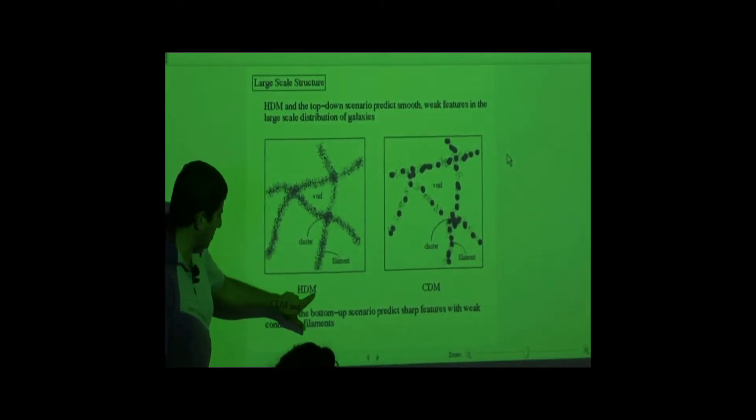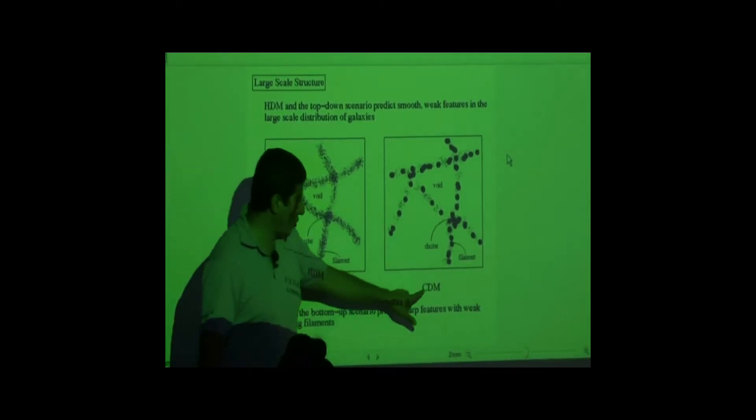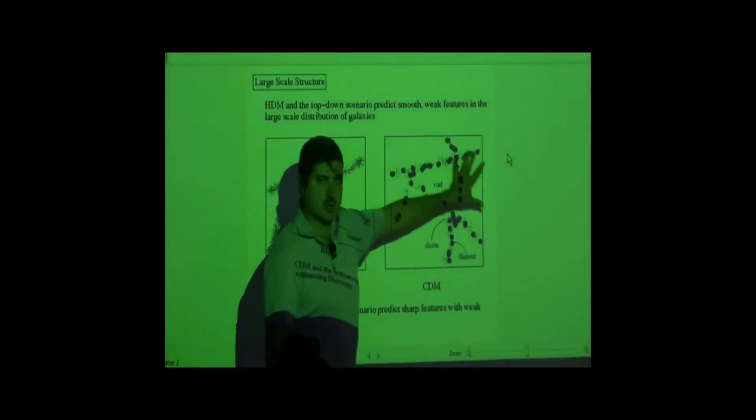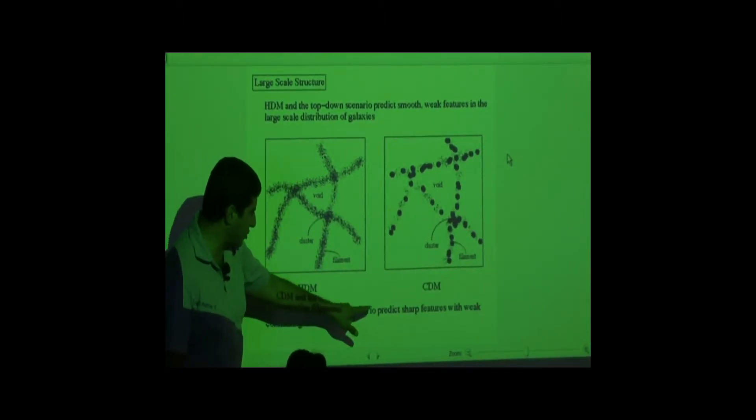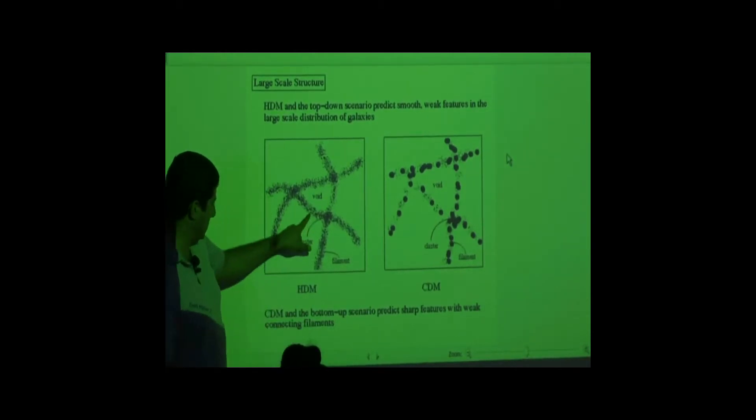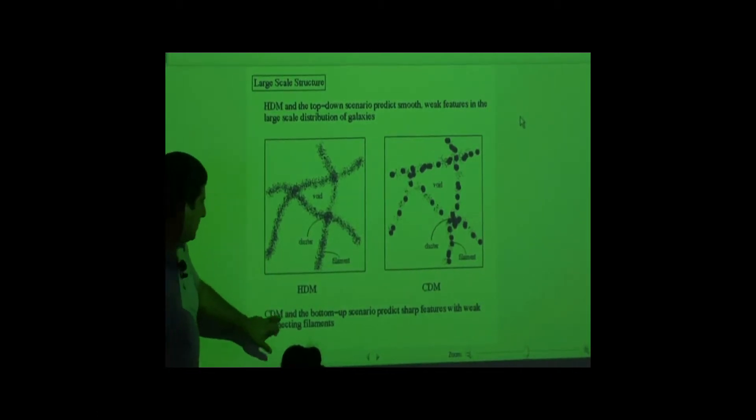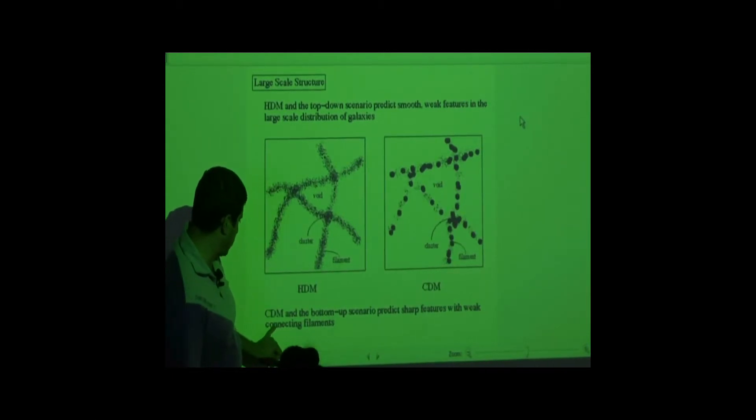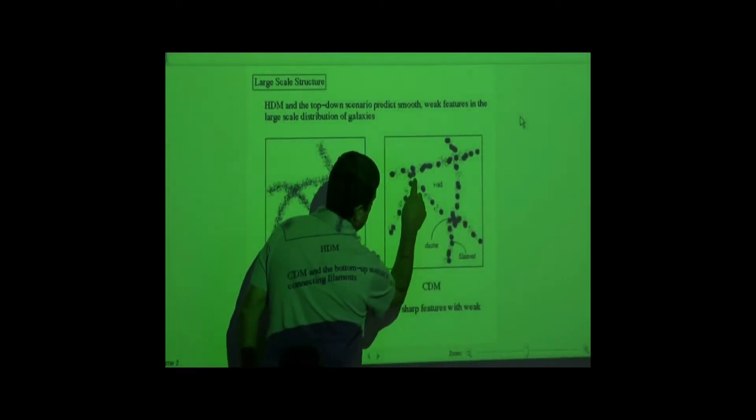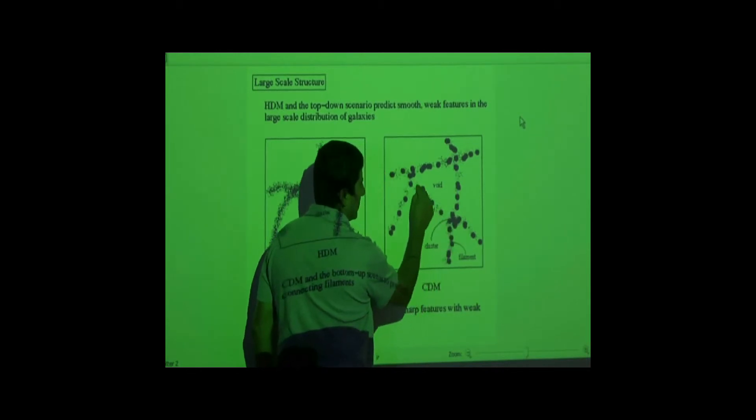According to the hot dark model, the structure of the universe should look like this. According to the cold dark matter model, the structure should look like this. Cold dark matter and the bottom-up scenario predict sharp features with weak connecting filaments. The CDM and the bottom-up scenario predict sharp features with weak connecting filaments. You see here, the connecting filaments is weak. Like this. And then they're clustered here. Strong clusters and weak filaments here.